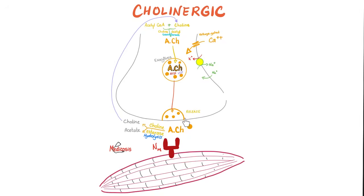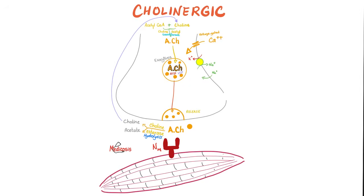What do you do with acetylcholine after it has performed its job? If you leave it there, you'll end up with continuous contraction until you die. You've got to get rid of it. How? Hydrolysis — break it down in the presence of water. The enzyme that does this is cholinesterase, because this is acetylcholine. Break it down into choline and acetate, and then you can recycle them back to make new acetylcholine.